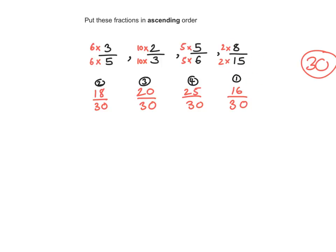So if we put these fractions in ascending order — smallest to largest — the smallest is 8 over 15. Then it's 3 over 5, or three fifths. Then it's 2 thirds. And the last one is 5 sixths, or 5 over 6.